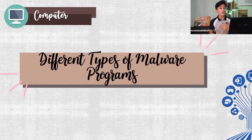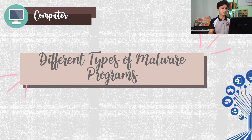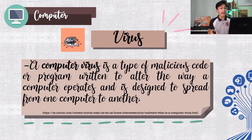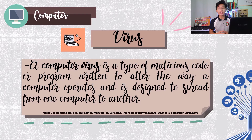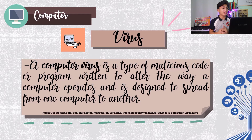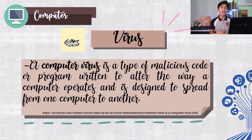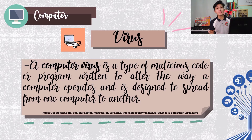The different types of malware programs. Let's start with the virus. A computer virus is a type of malicious code or program written to alter the way a computer operates and is designed to spread from one computer to another. A virus is a self-replicating program that is designed to infect a computer by rapidly spreading from one file to another.